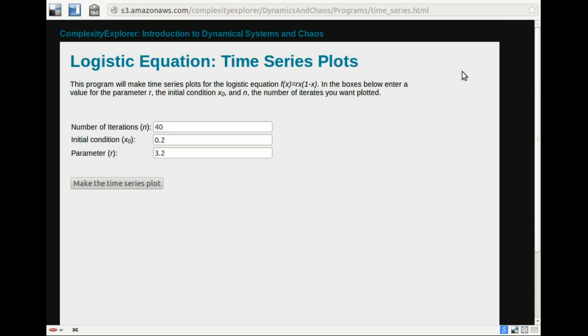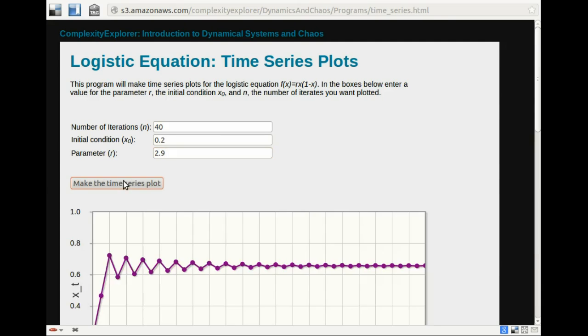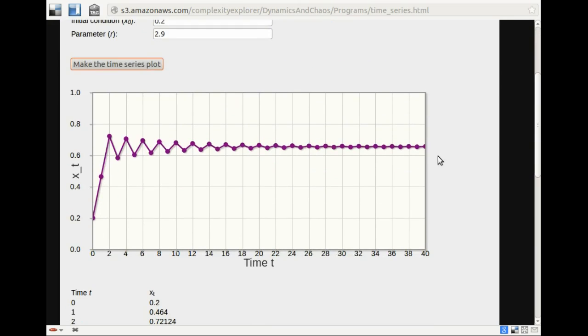Here's the program that makes time series plots for the logistic equation. Let's use this to make time series plots for three different parameter values, three different r values. So I'll go down here, and the first value I'm going to try is 2.9. So I enter 2.9, I ask the program to make the time series plot, and there it is. And we see that the orbit is approaching a fixed point. As we've seen before, this is an attracting fixed point. It takes a little while to get there. It wiggles back and forth,